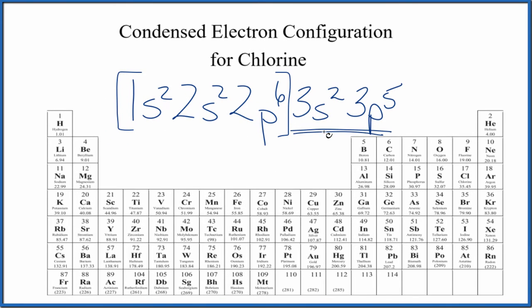So we look at the periodic table. We know that chlorine has the atomic number of 17, 17 protons, 17 electrons, since it's neutral.